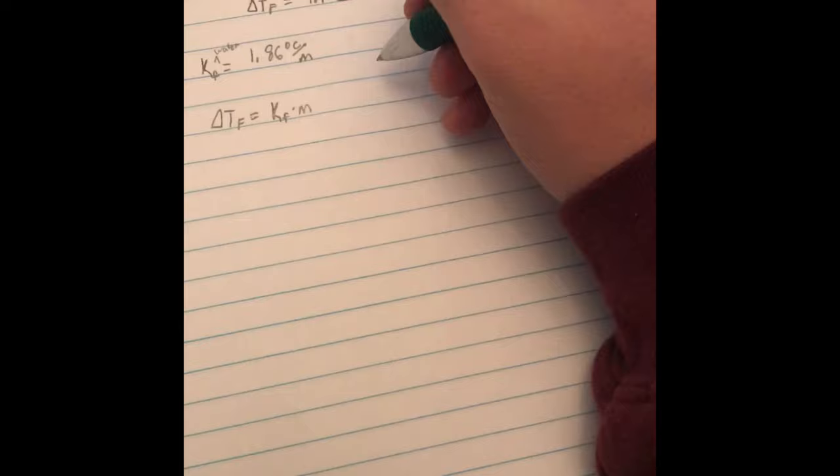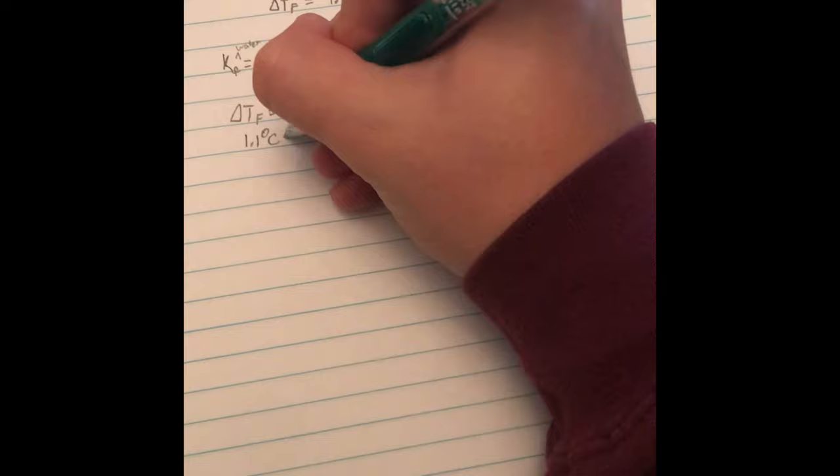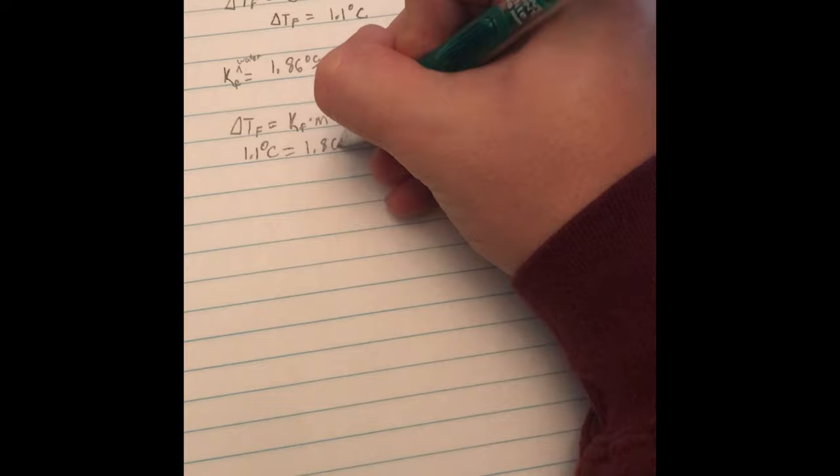What do we have here? Kf, and then change of Tf is 1.1 degrees Celsius. After you do this, you have 1.1 degrees Celsius. Kf would be 1.86 degrees Celsius over molality.